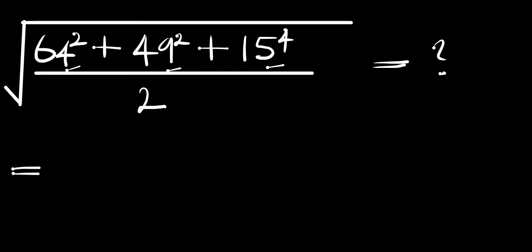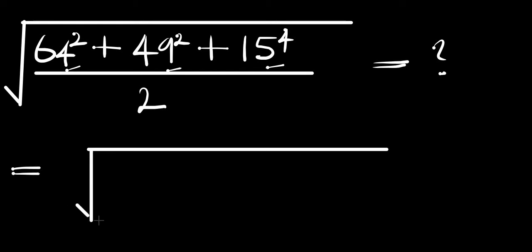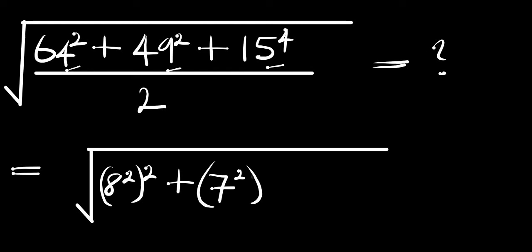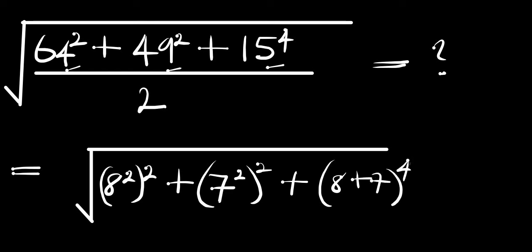So this equals — we can write our square root here. Instead of 64 we have 8 power 2, and this raised to the power of 2; plus 7 power 2 raised to the power of 2; plus 15, which is simply 8 plus 7, raised to the power of 4. And everything here is divided by 2.